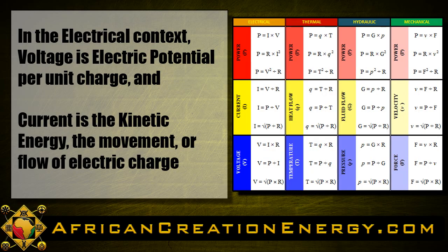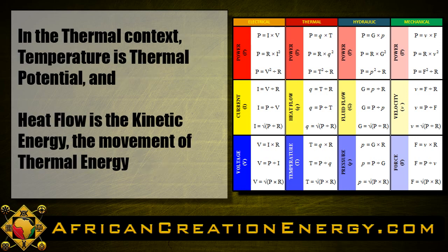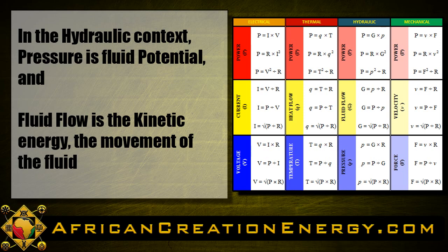In the electrical context, voltage is electrical potential per unit charge, and current is kinetic energy — the movement or flow of electric charge. Likewise, in the thermal context, temperature is thermal potential, and heat flow is kinetic energy — the movement of thermal energy. In the hydraulic context, pressure is fluid potential, and fluid flow is the kinetic energy — the movement of the fluid.